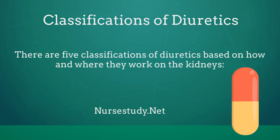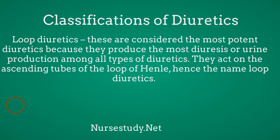Now we're going to look at the classification of diuretics. There are five classifications of diuretics based on how and where they work in the kidneys. Loop diuretics are considered the most potent diuretics because they produce the most diuresis of urine production among all types of diuretics. They act on the ascending tubes of the loop of Henle, hence the name loop diuretics.